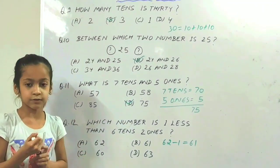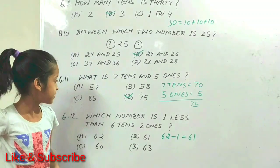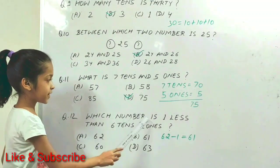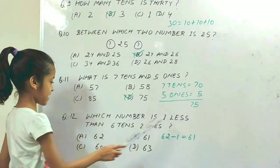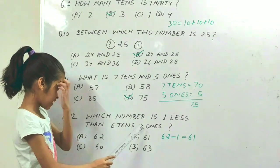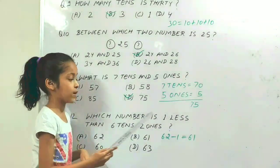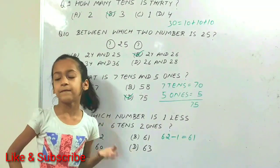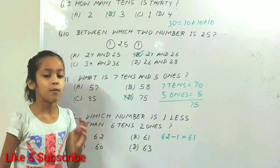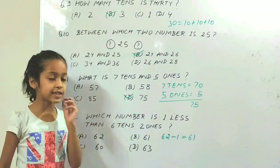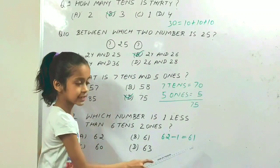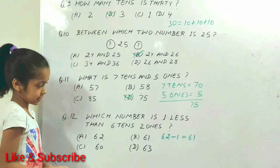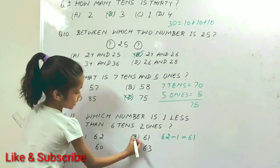The next question is: which number is 1 less than 6 tens and 2 ones? If we subtract 1 from 62, the answer is 61. So the answer is B, 61.